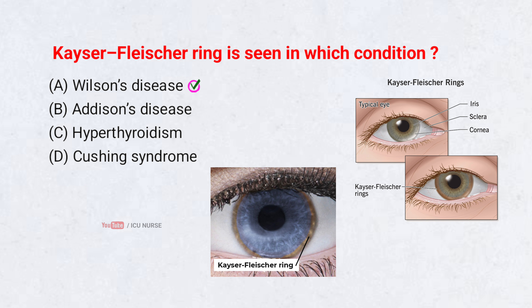Correct answer: A. Wilson's Disease. Kayser-Fleischer rings are brownish-golden deposits at the corneal margin caused by copper buildup. They are a classic sign of Wilson's disease, a disorder of copper metabolism.